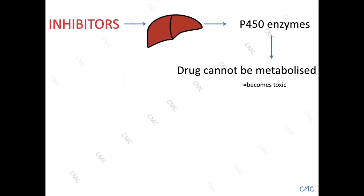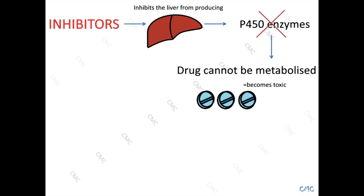On the complete opposite end of the scale are the inhibitors. Inhibitors inhibit the liver from producing cytochrome P450 enzymes. Without the cytochrome P450 enzymes, drugs cannot be metabolized. And the more drugs you put in, the more build-up will happen and it will result in toxic effects.